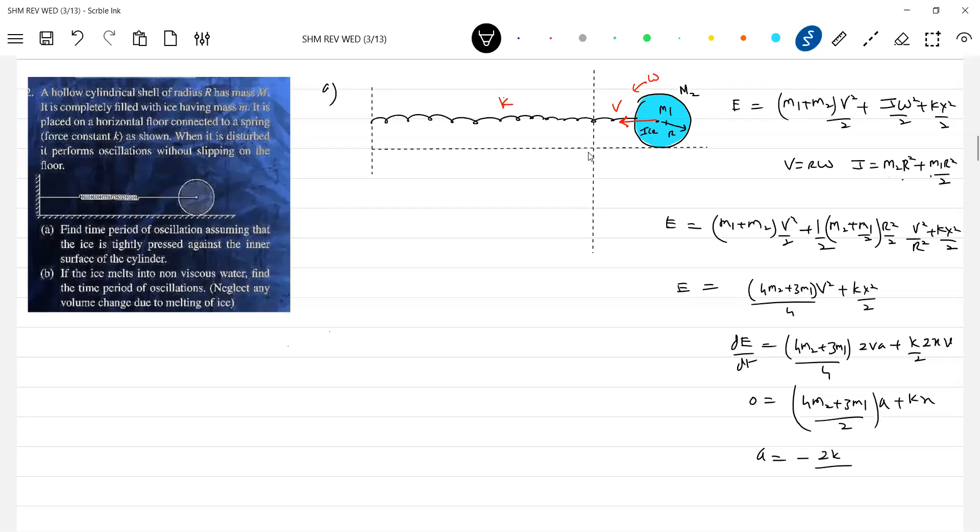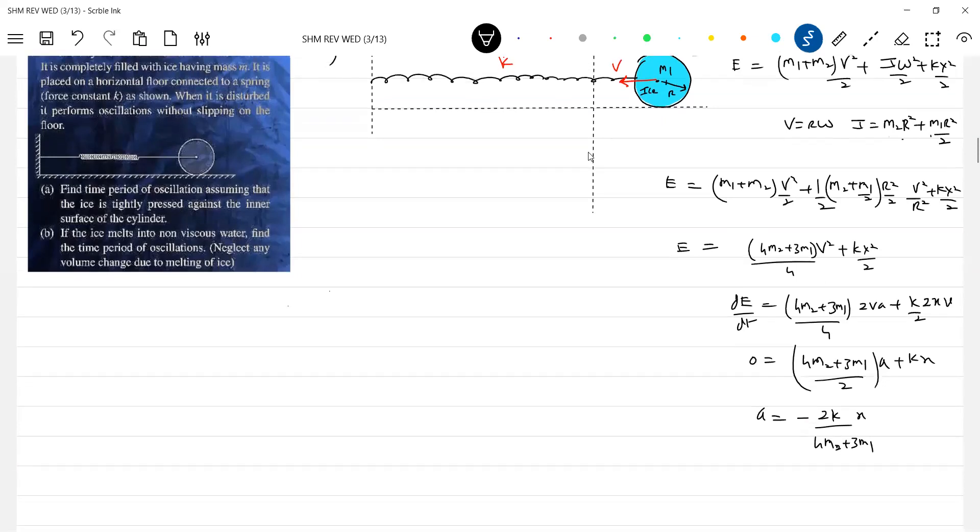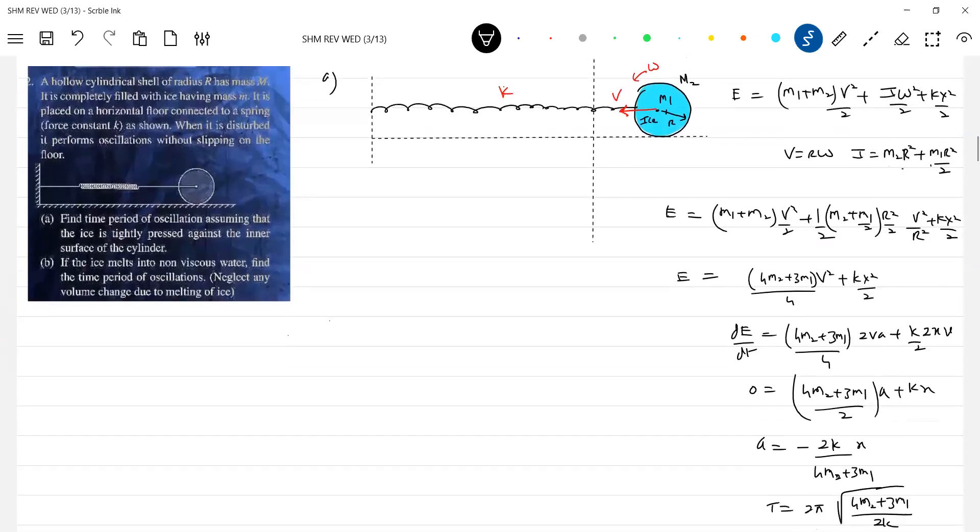Minus 2K by... The time period will be... This is the first part of the problem.